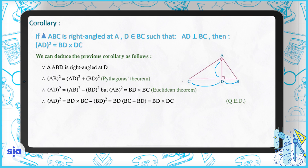We can deduce this corollary as follows. Since triangle ABD is right-angled at D, therefore AB² = AD² + BD² by the Pythagorean theorem, and AD² = AB² − BD². Also AB² = BD × BC. So AD² = BD × BC − BD² = BD(BC − BD), which equals BD × DC.